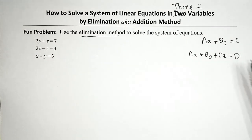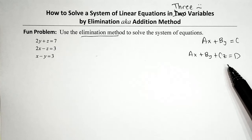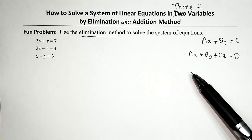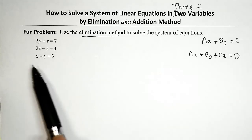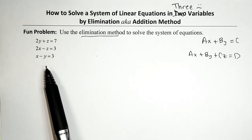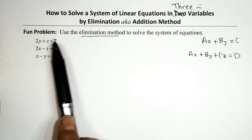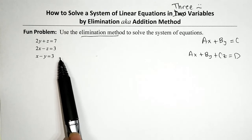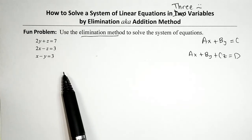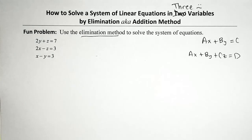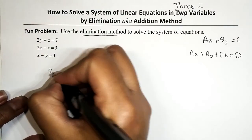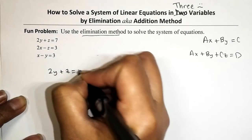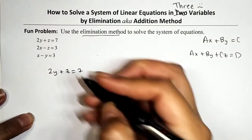Standard form means variables on one side, constant on the other, and it would be nice to have integer coefficients. All three of these equations on the left are in standard form — variables on one side, constant on the other. But the fact that we don't have the X, Y, and Z lined up is really messing with my flow. So let's rewrite: the first equation is 2Y + Z = 7.